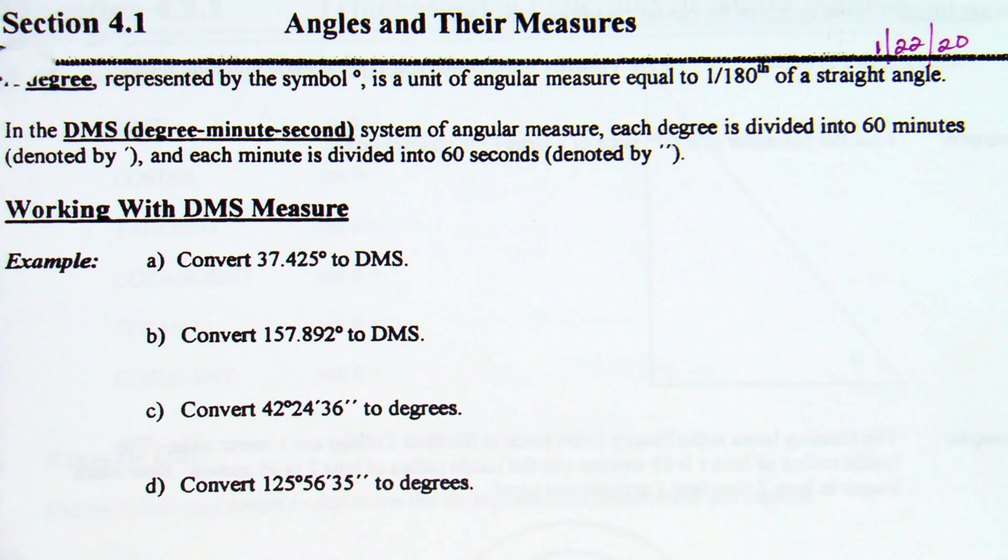So, today's kind of an introduction, looking at some conversions. First definition up there is degree. You guys are probably most familiar with degrees, represented by the little degree symbol. If in this chapter it has that little symbol after it, it's a degree. Unit of angular measure equal to 1/180th of a straight angle. A straight angle is a straight line, which equals 180 degrees. So it's saying it's 1/180th of that.